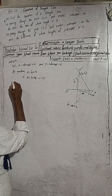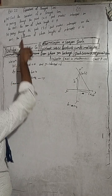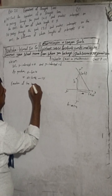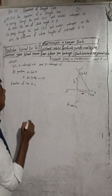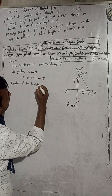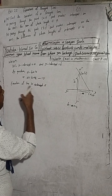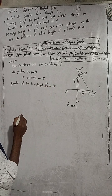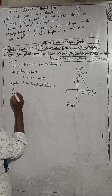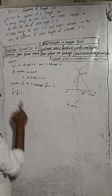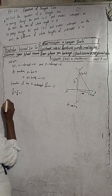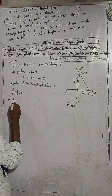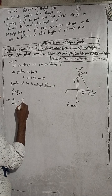Now, equation of line. Find the equation of a straight line — equation of line in intercept form. The equation of a line in intercept form is given by x/a plus y/b is equal to 1. So substituting a = b + 4, we get x/(b + 4) plus y/b is equal to 1.